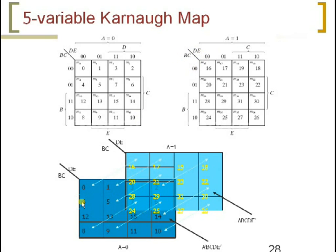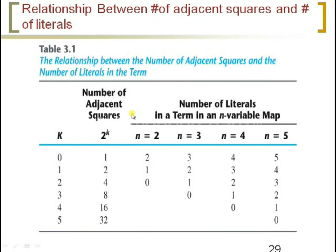Cells 0, 16, 1, 17, 8, and 24 are called adjacent cells. The value of the first cell is A-bar, B-bar, C-bar, D-bar, E-bar. Only one literal changes between adjacent cells, therefore these cells are considered adjacent. Now let us see the relationship between adjacent squares and the number of literals.